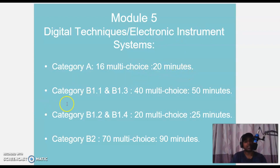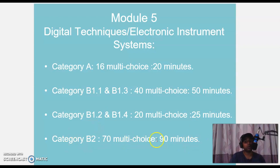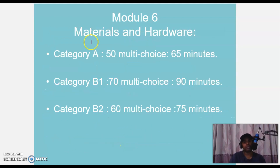Module 5 Digital Techniques, Electronic Instruments and Systems — a kind of important module. Category A: 16 MCQs, 20 minutes. Category B1.1 and B1.3: 40 MCQ questions, 50 minutes. Category B1.2 and B1.4: 20 MCQs, 25 minutes. Category B2: 70 MCQs, 90 minutes — B2 has the most questions.